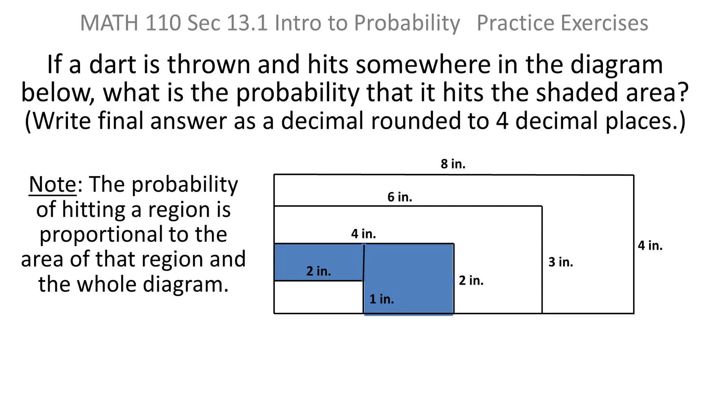First of all, note that the probability of hitting a region is proportional to the area of that region in the whole diagram. So it's really going to come down to calculating the area of the entire region, the entire diagram, versus that of the blue shaded area.